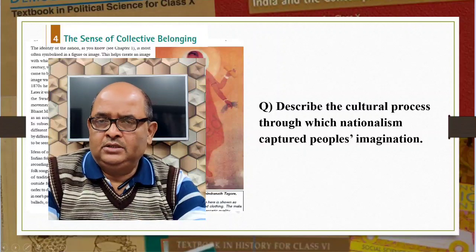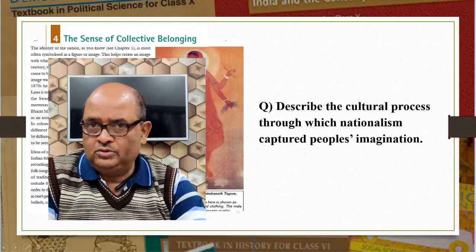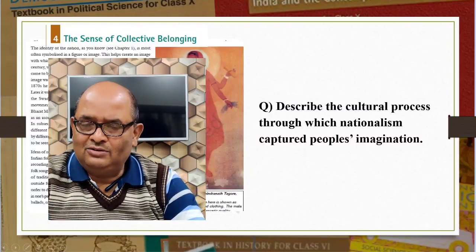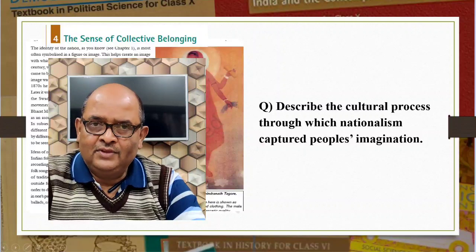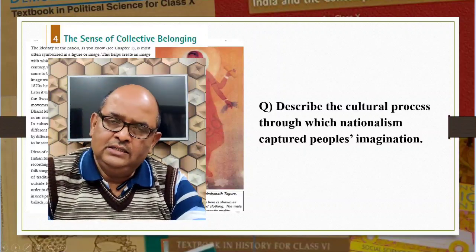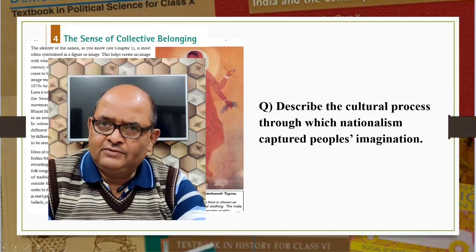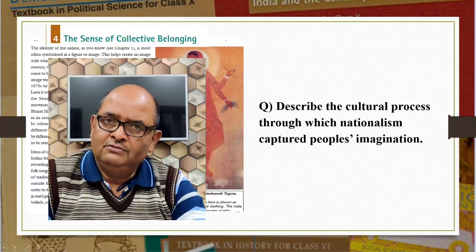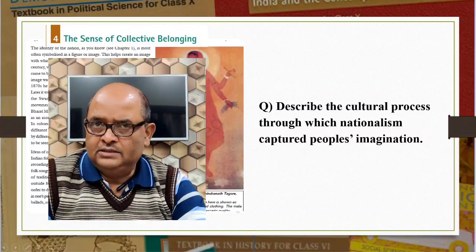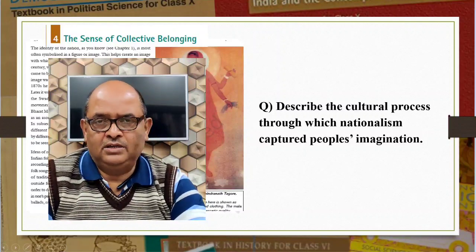Second, song: In 1870, Bankim Chandra Chattopadhyaya wrote Vande Mataram as a hymn to the motherland, and it acquired the status of a nationalist song. Third, flag: In Bengal, a tricolour was designed. Gandhiji himself had designed the Swaraj flag — a tricolour flag with a charkha at the centre. The charkha represented the Gandhian ideal of self-help. The flag became a symbol of defiance.